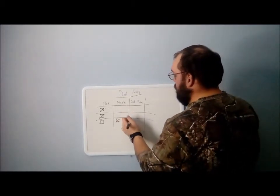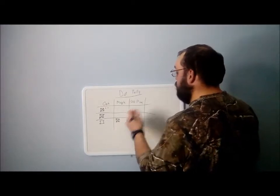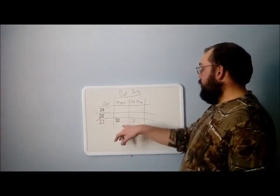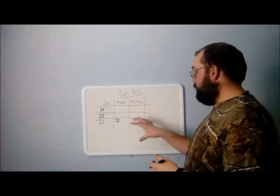And five white pine. One, two, three, four, five. So eight, ten, and five. That's your tree count for the total plot.